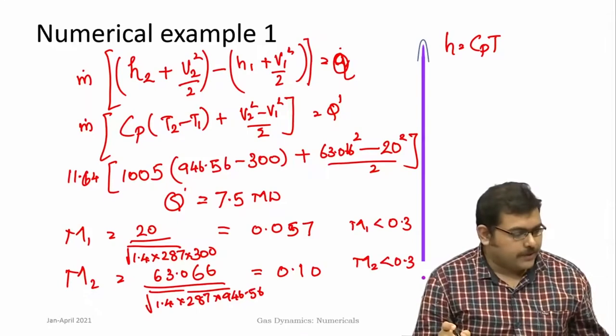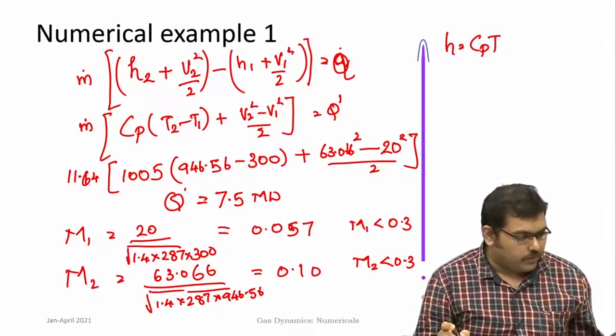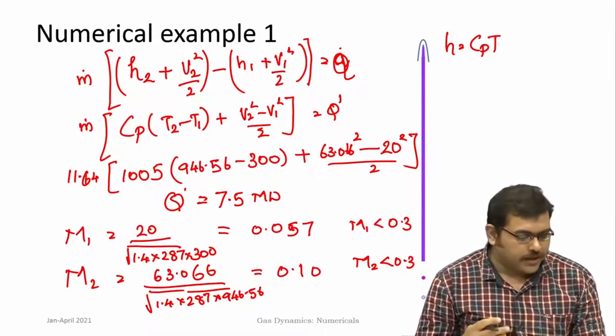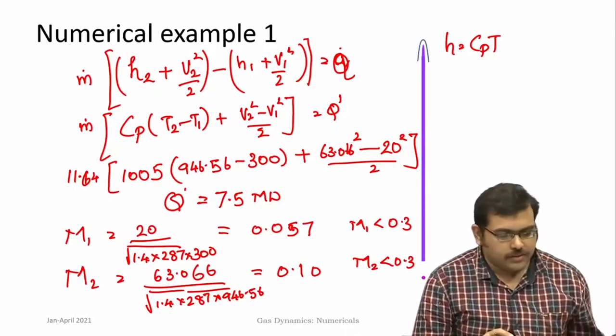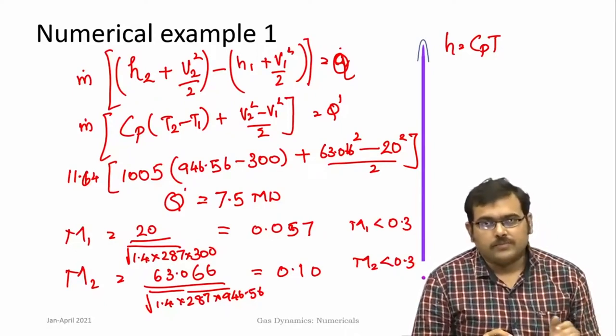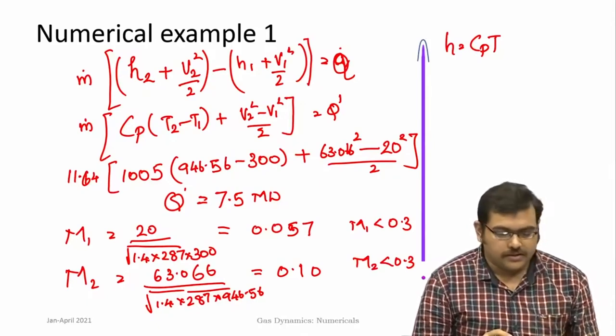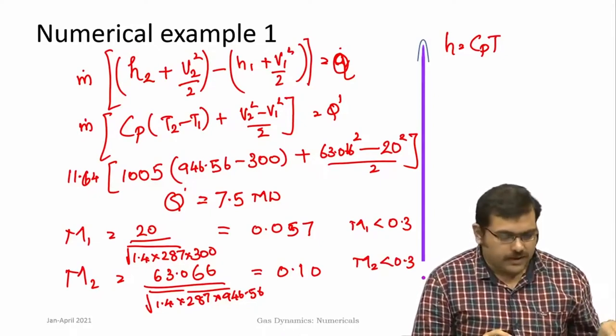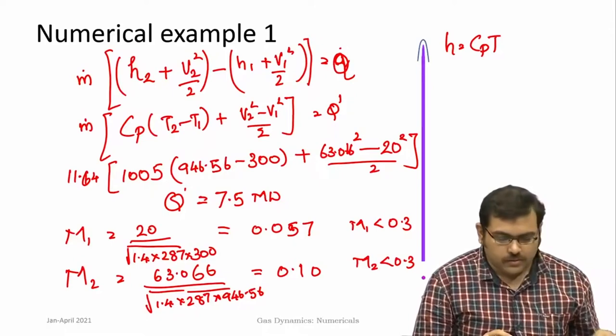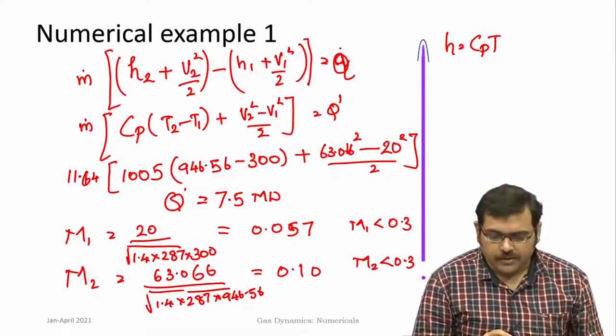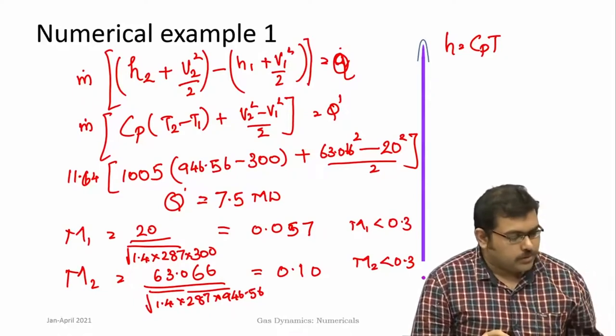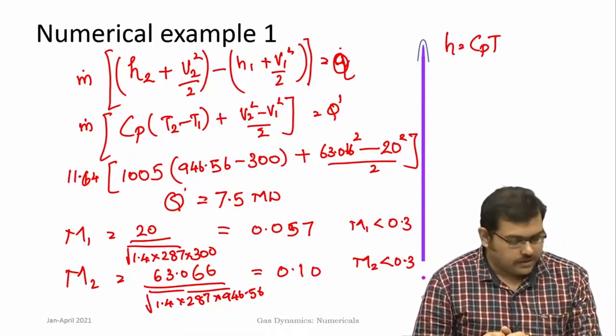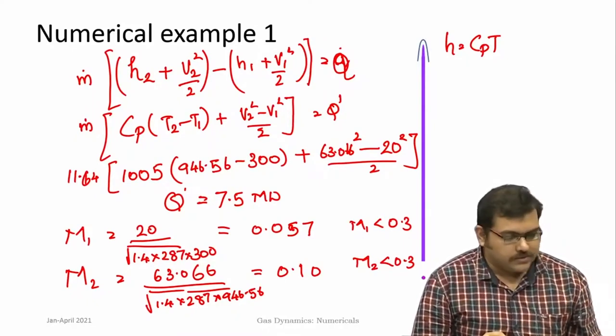But this is not a constant density flow. So this example considers different concepts—it applies the quasi 1D relations, combinations of conservation of mass, momentum and energy, as well as the thermodynamic principles of ideal gas law. And we are able to get this complete solution. This applies all the different concepts that we had learnt in the previous sections.